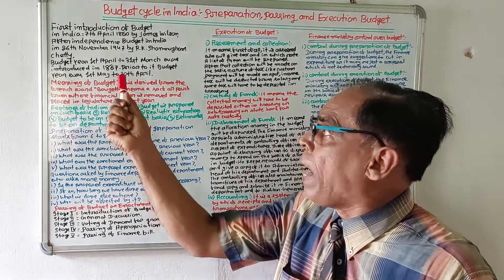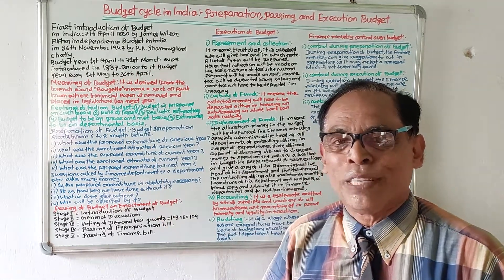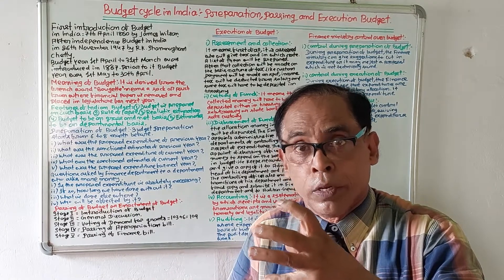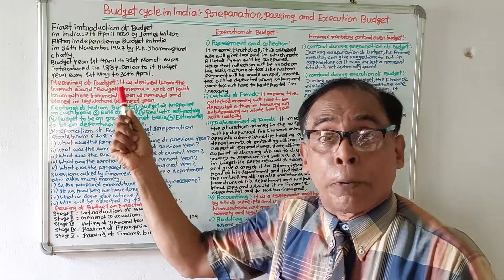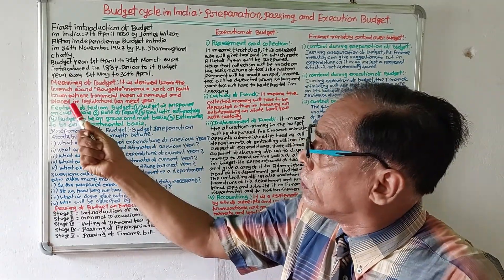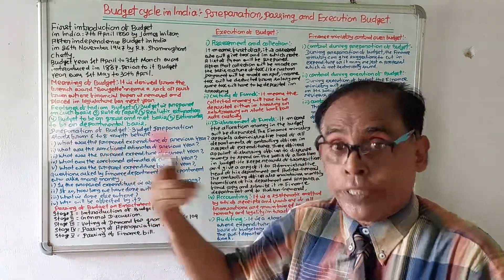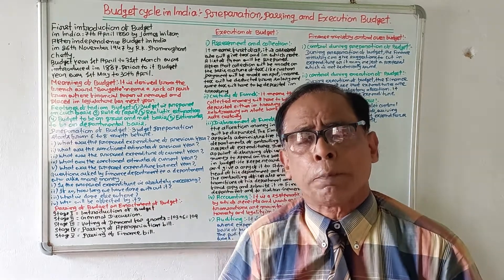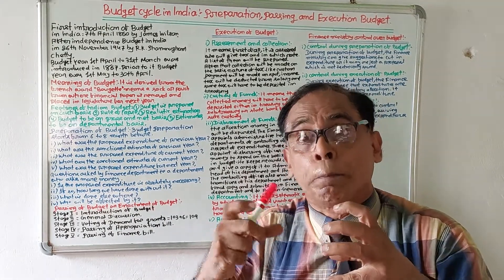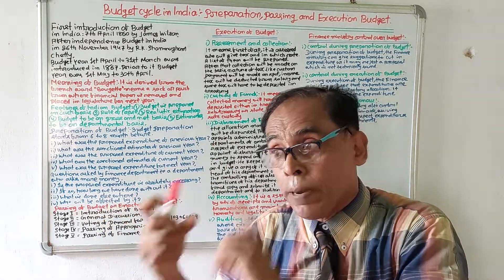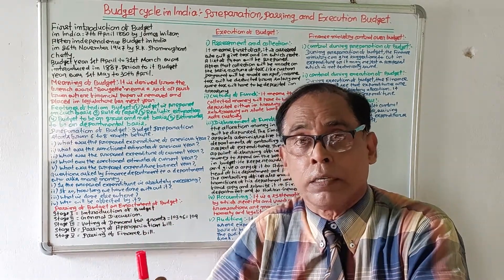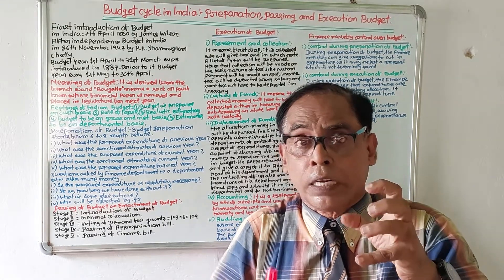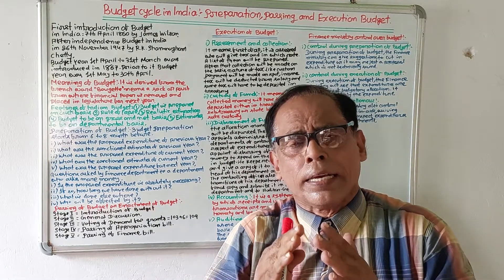In India, the budget year of 1st April to 31st March has been implemented from 1867, but prior to 1867 the budget year was 1st May to 30th April. The word 'budget' is derived from the French word meaning a sack or pouch from which financial papers are removed and placed before the legislature, where the financial scheme for the next year is mentioned. So budget means an annual statement of income and expenditure for the next year.